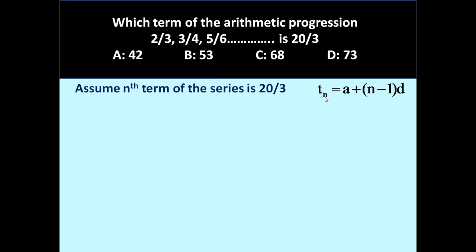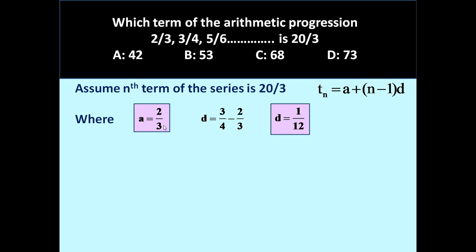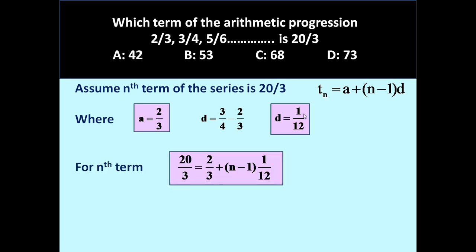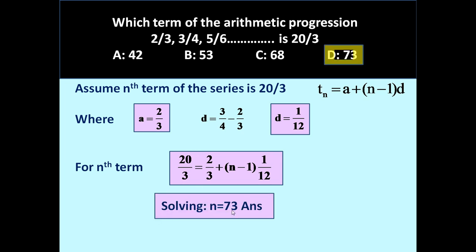Let us assume the nth term of this series is 20/3 and we want to determine the value of n. Using the formula tn equals a plus (n minus 1) into d: a is the first term, which is 2/3, and d equals 3/4 minus 2/3, which simplifies to 1/12. So a is 2/3 and d is 1/12. Setting tn equal to 20/3 and substituting all values into the formula, we simplify the equation.